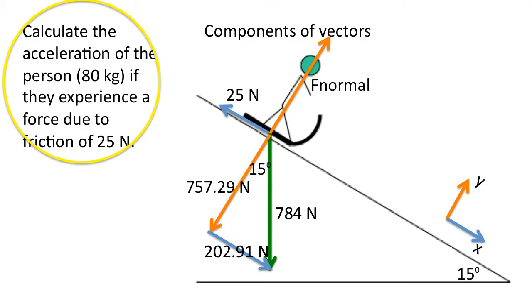At this point, we have all of our information required to begin the problem. We've labeled the vectors. So calculate the acceleration of the person, 80 kilograms, if they experience a force due to friction of 25 newtons.